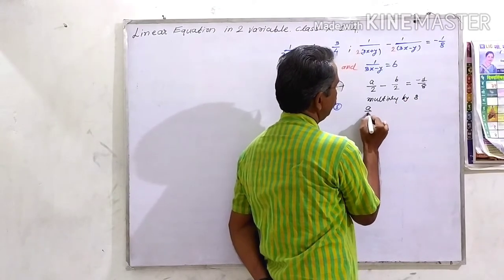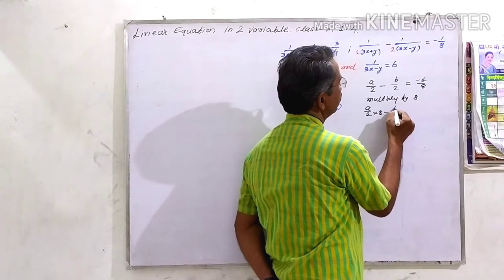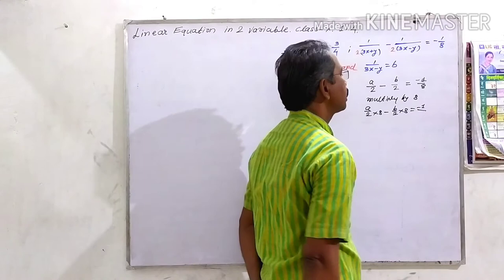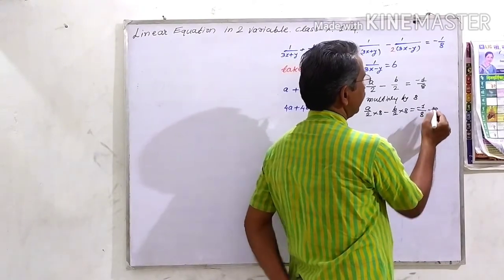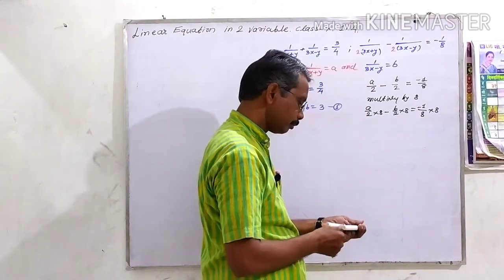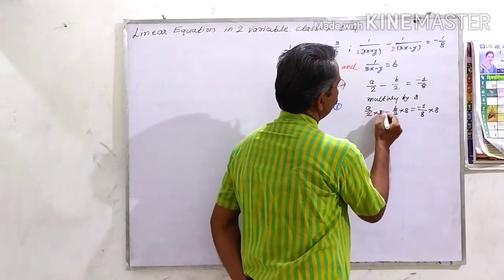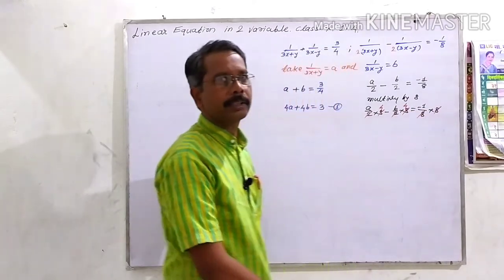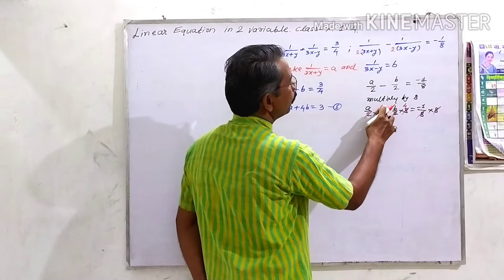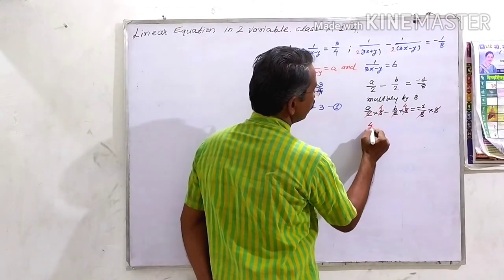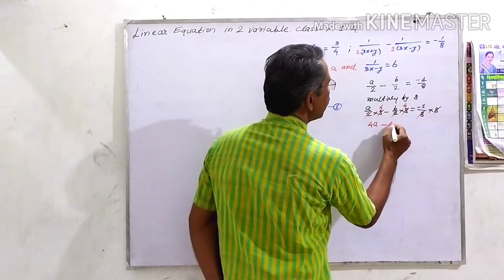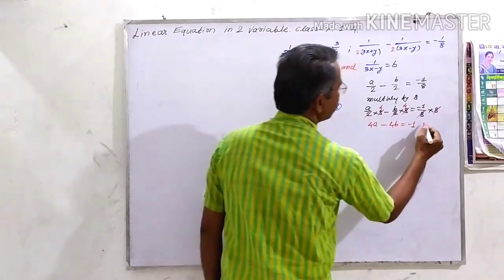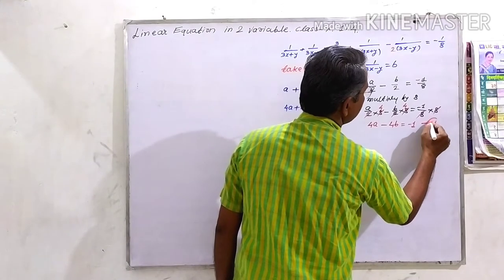Multiplying through by 8: a upon 2 times 8 minus b upon 2 times 8 equal to minus 1 upon 8 times 8. The 2s cancel giving 4, and the 8s cancel. We get 4a minus 4b equal to minus 1. Let this be our equation number 2.